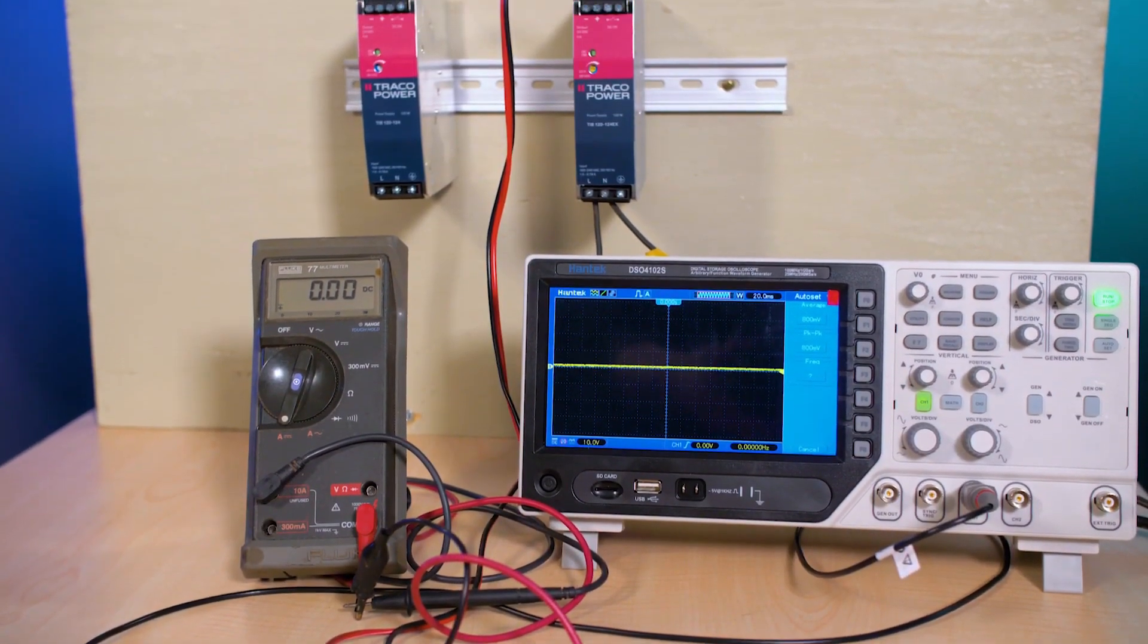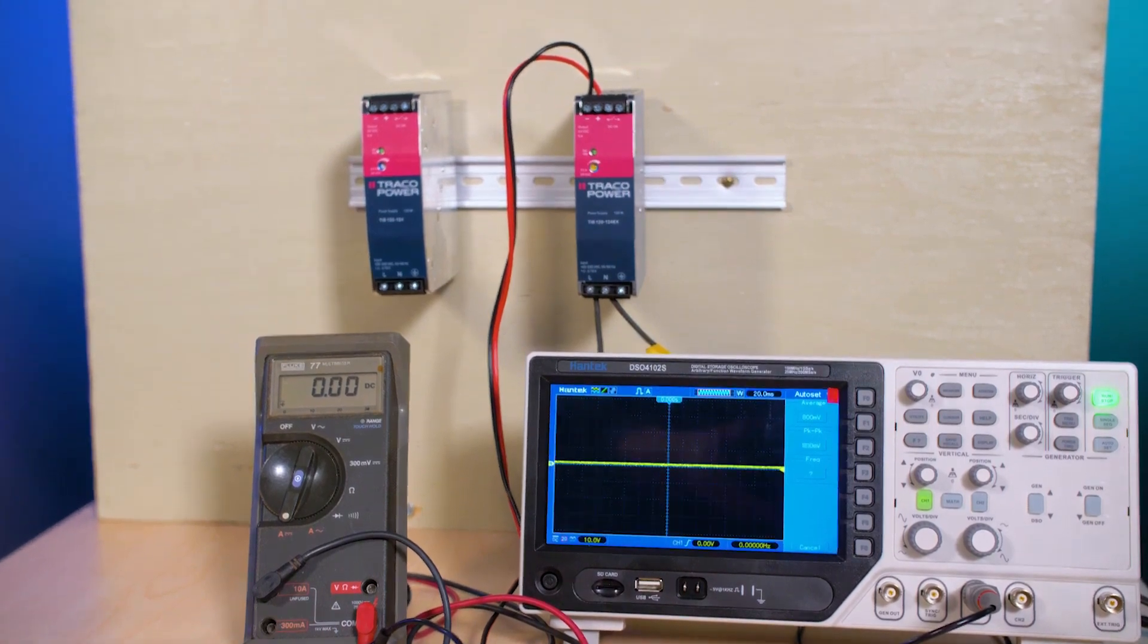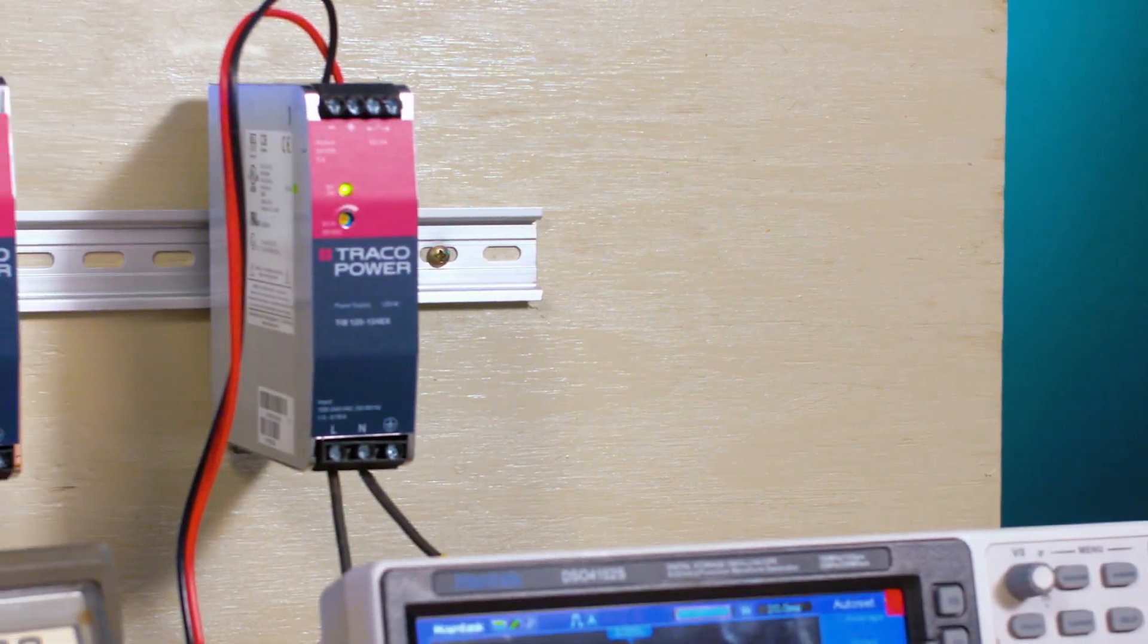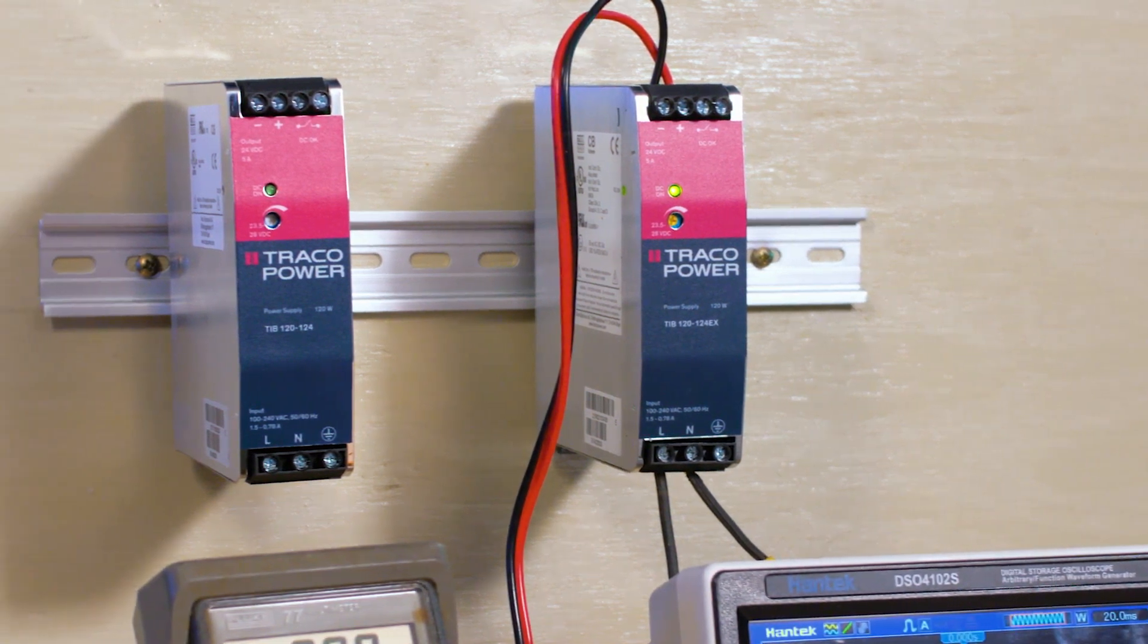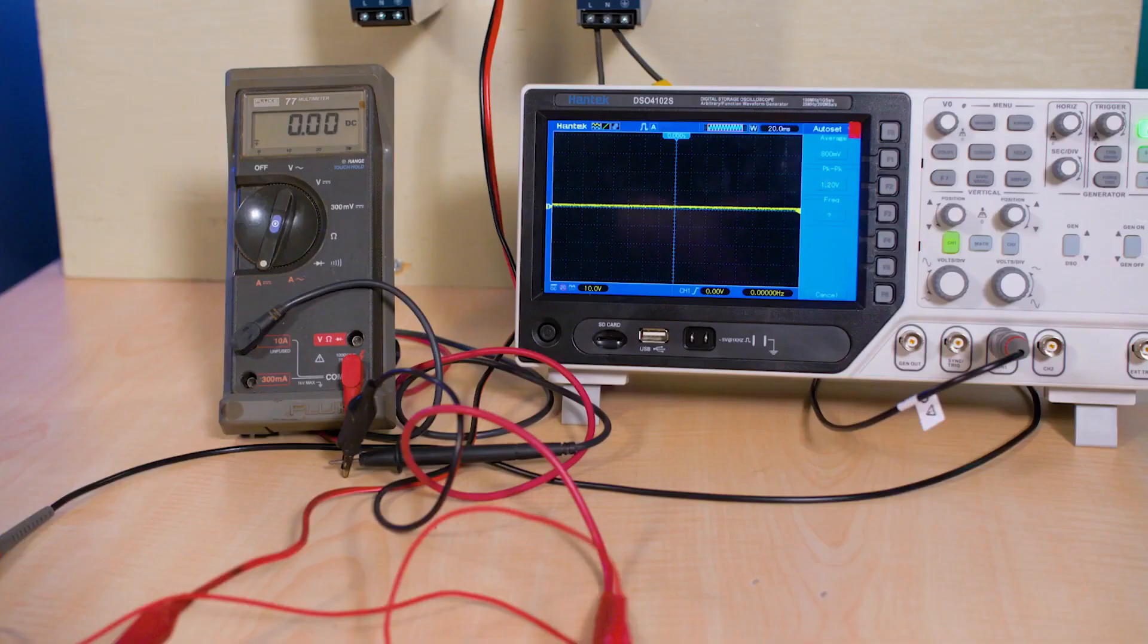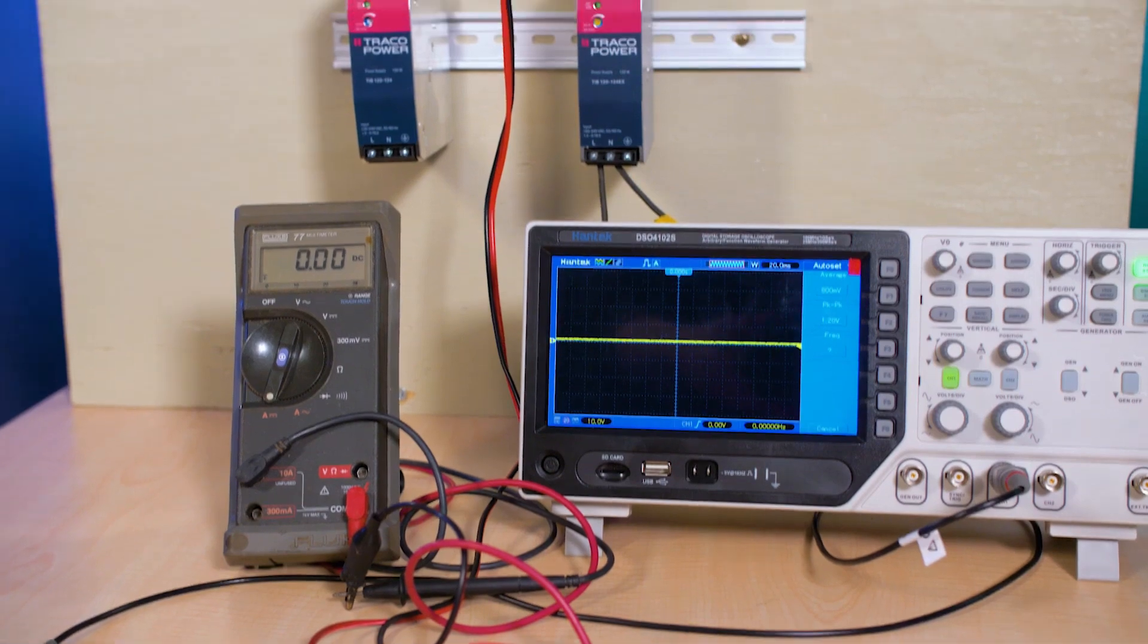We've got two examples here today. The supplies come in versions providing 12, 24, and 48 volt outputs with four power levels covering 80 to 480 watts. The examples we have today both put out 120 watts on their 24 volt DC outputs and can provide 5 amps of current.